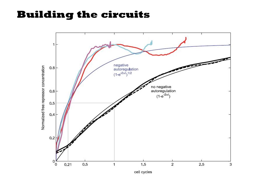Finally, they build the two circuits and follow fluorescence over time, and indeed, without the negative feedback shown in black lines, the system has a much slower response time than the auto-regulated ones in colored lines.